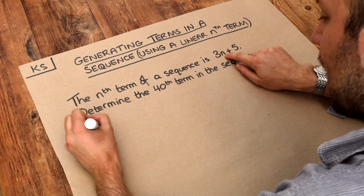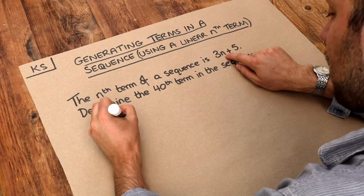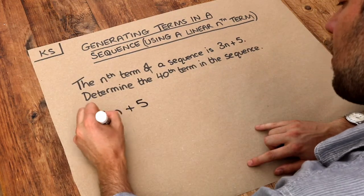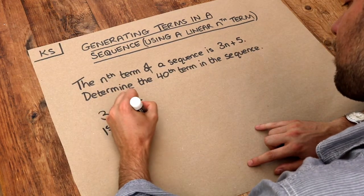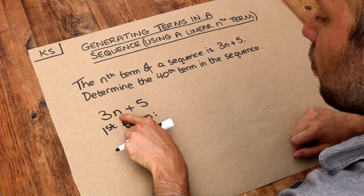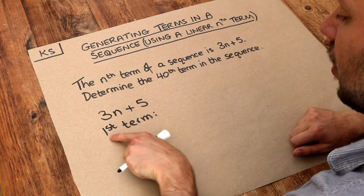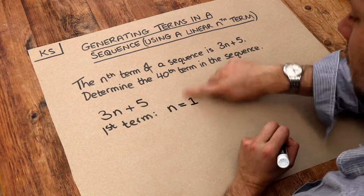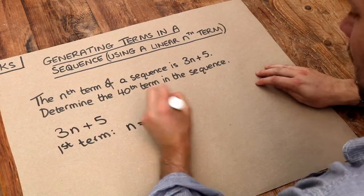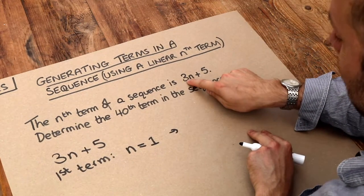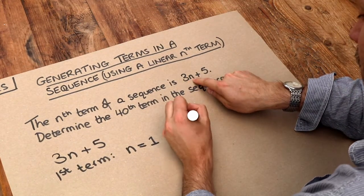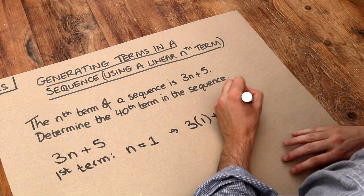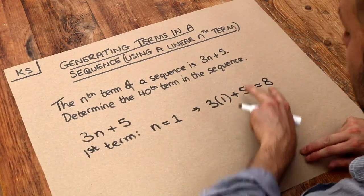So let's say, for example, we had the nth term formula 3n plus 5. Then if we wanted to find the first term of the sequence, the value of n is wherever we are in the sequence, the current position. So if it's the first term, then n would be equal to 1. And if we just substitute 1 into this, we get 3 times 1 plus 5, and 3 times 1 plus 5 is 8. So the first term of the sequence would be 8.